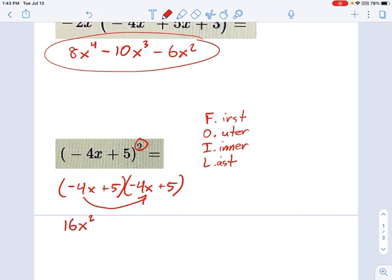The outer terms are these two. Negative 4x times positive 5. So that's negative 20x. The inner terms are these two. That's positive 5 times negative 4x. That's another negative 20x. And then the last terms are the ones at the end, the rightmost terms. That's a positive 25.